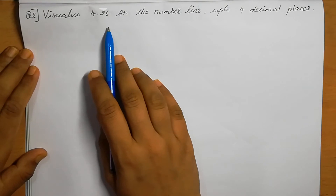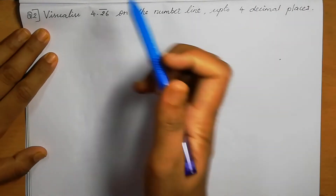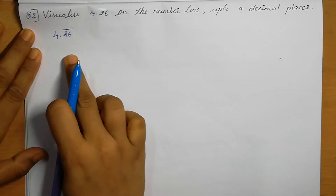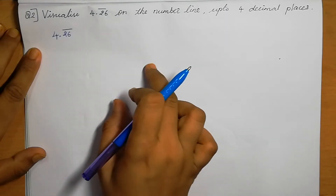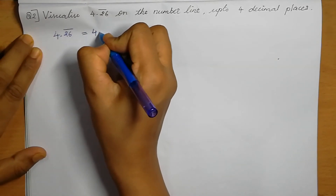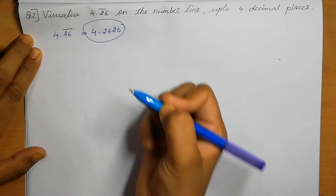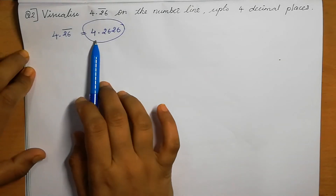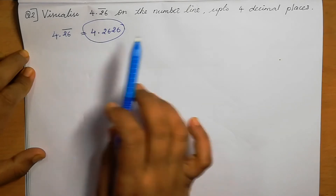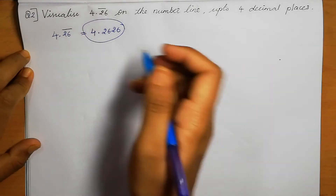Question 2: Visualize 4.26̄ on the number line up to 4 decimal places. So we need to represent 4.26̄, which means 4.262626... and so on. Up to 4 decimal places that is 4.2626. We check that 4.2626 lies between 4 and 5, so between 4 and 5 we magnify the number line.